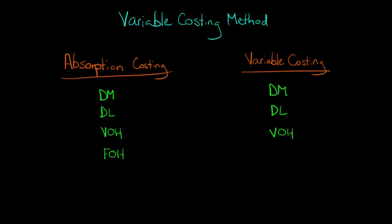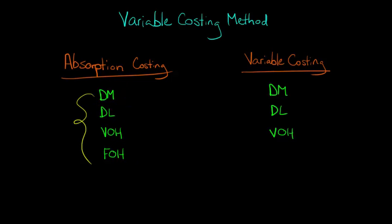Bear in mind that we've got two different ways to classify these product costs. One is we can say all four — direct materials, direct labor, variable overhead per unit, and fixed overhead — all four of those are classified as product costs. When we talk about product costs, we're talking about costs that attach themselves to the product. They're inventoriable costs.